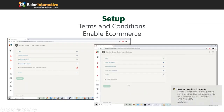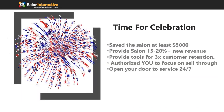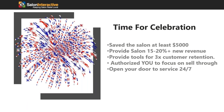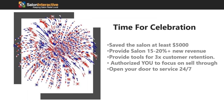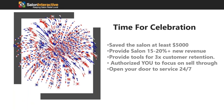Once you've agreed to the terms and conditions, click 'I understand and accept the terms and conditions.' The next step is to enable e-commerce — this is critical because if you don't enable it, you won't have a working online store. Once you've clicked that, click complete and you're good to go. Congratulations — you've now saved your salon at least five thousand dollars, provided 15 to 20 percent additional revenue, and tools for three times the customer retention, with your store open 24/7.